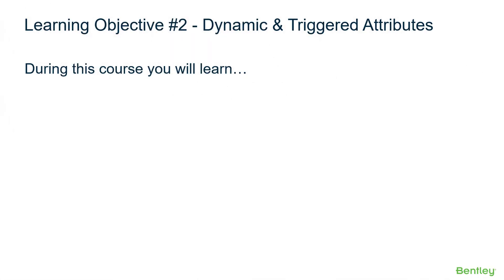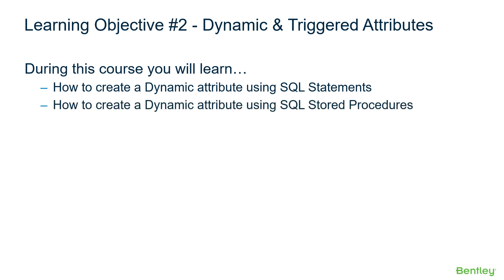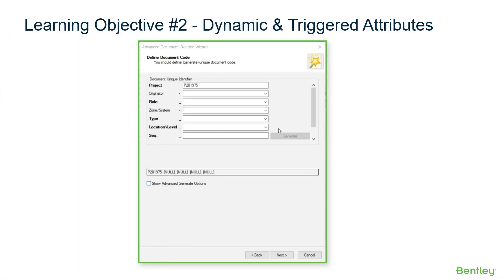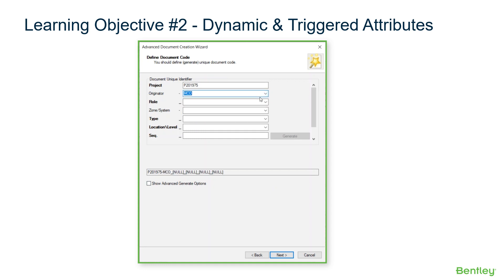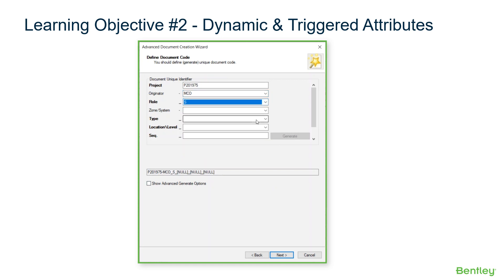During this section of the course, you'll learn how to create a dynamic attribute using SQL statements, how to create a dynamic attribute using SQL stored procedures, and how to set the triggered attributes. As demonstrated in the clip, the document creation wizard uses dynamic attributes to populate the selection options for each attribute, and triggered attributes are used to limit the selection set based on the previously selected values.